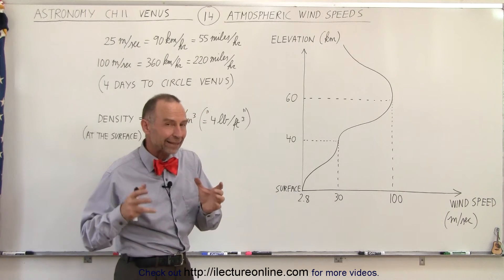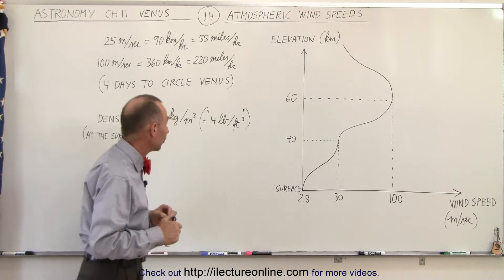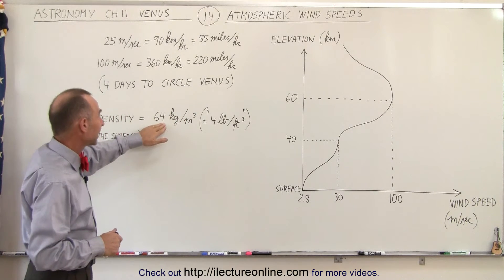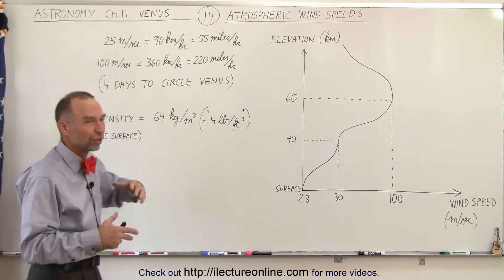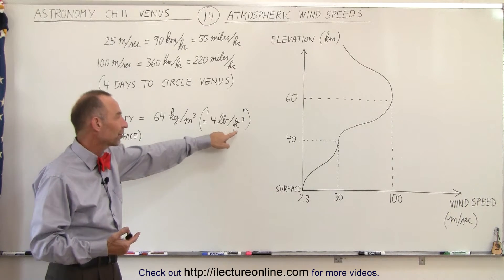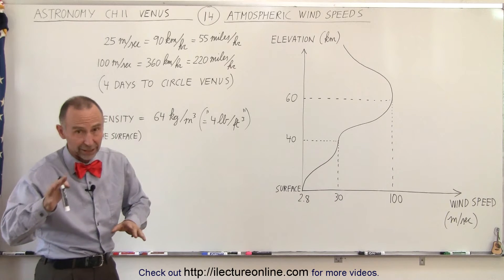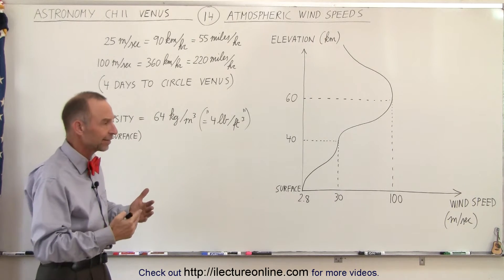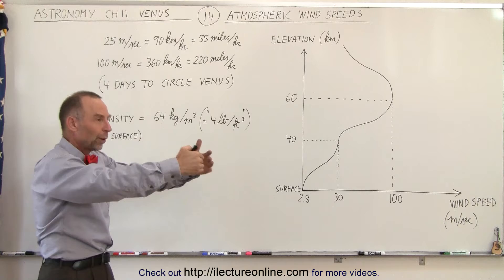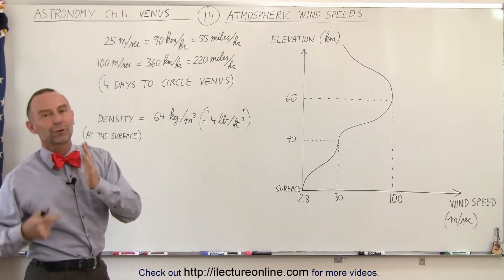But keeping in mind that the atmosphere is very dense near the surface, about 64 kilograms per cubic meter, which is equivalent to about 4 pounds of atmosphere per cubic foot. Imagine standing on the surface of Venus - not recommended by the way because it's very hot there - but if you could, the wind would probably move you or blow you over.